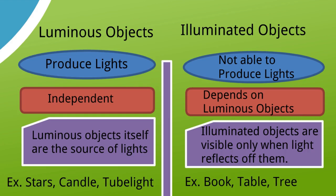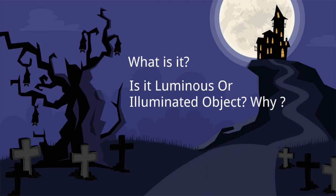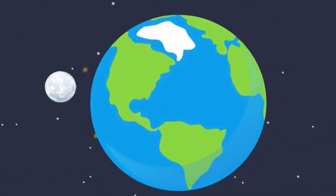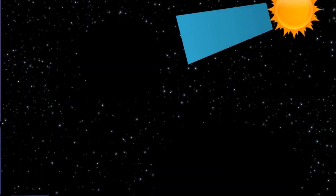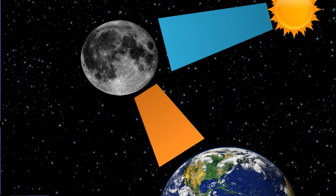Examples of illuminated objects: table, tree, stones. Look at this picture — it is night and you can see a bright object. What is it? Is it a luminous or an illuminated object? It's the Moon. The Earth moves around the Sun and the Moon moves around the Earth. Sometimes the Moon is in a position where sunlight falls on it and is reflected to Earth, and we can see the Moon.